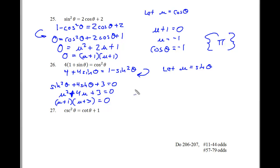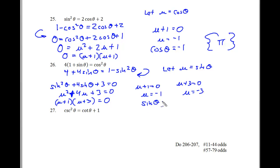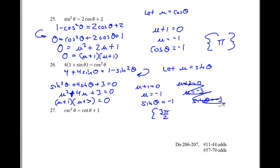Two numbers that multiply to 3 and add to 4: 1 and 3. So (u + 1)(u + 3) equals 0. This gives u equals negative 1 and u equals negative 3. Plugging sine back in: sine of theta equals negative 1 at 3 pi over 2. But sine of theta equals negative 3 is out of range for sine, so the only answer for problem 26 is 3 pi over 2.